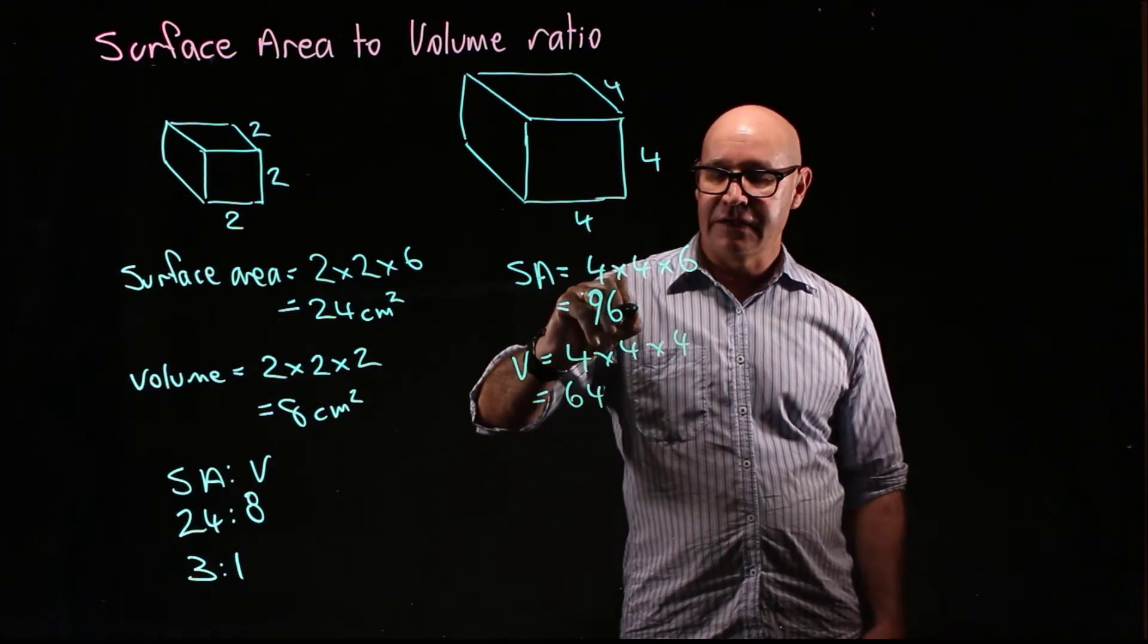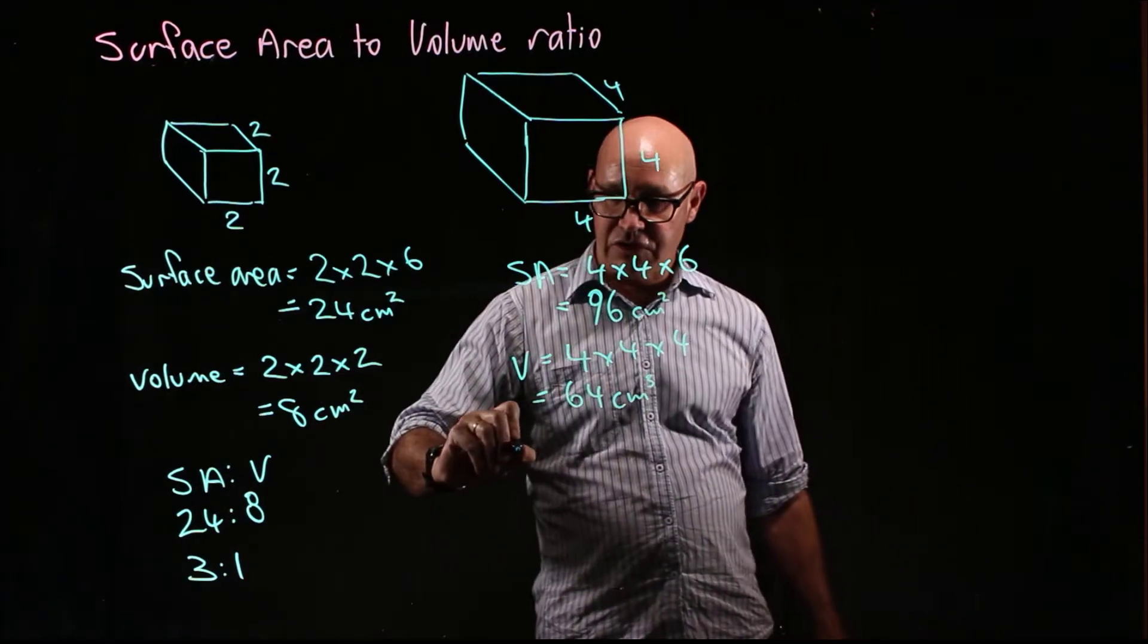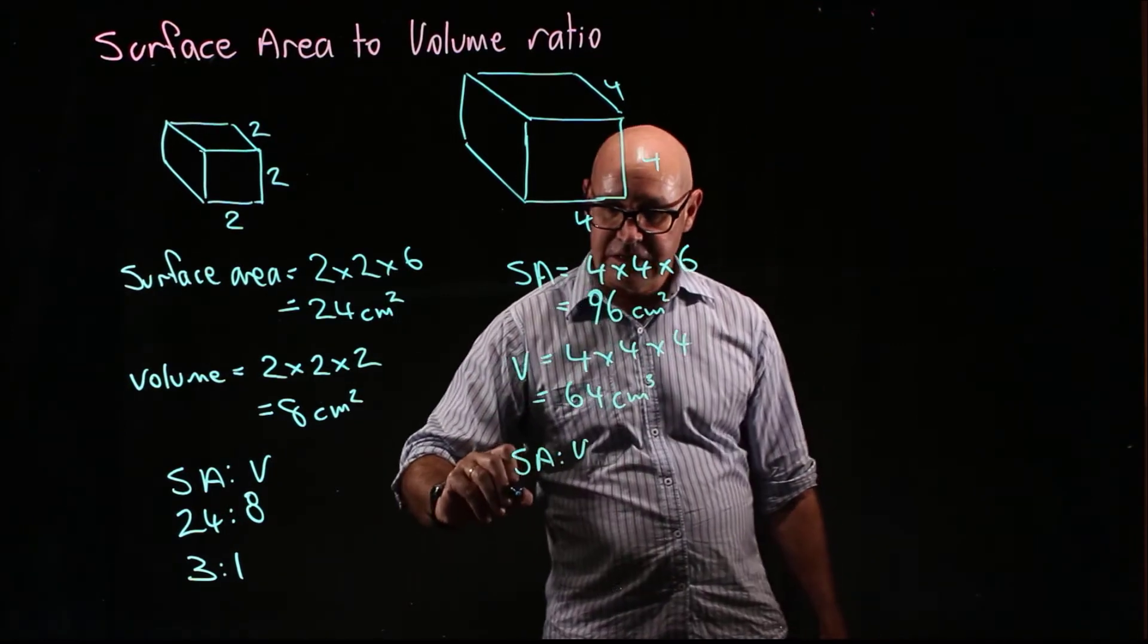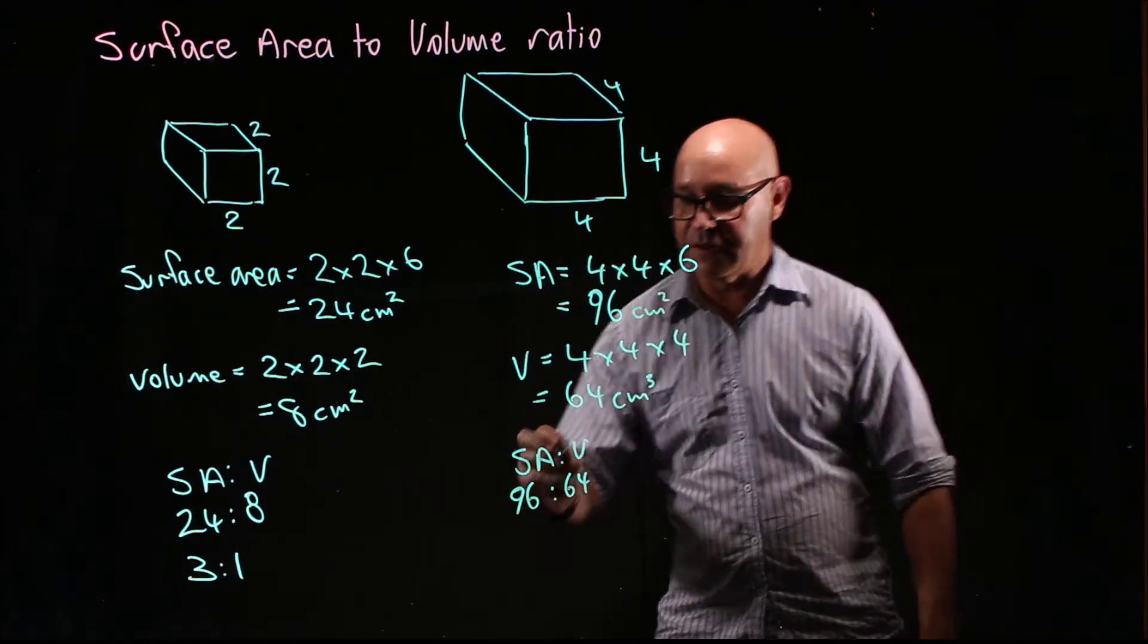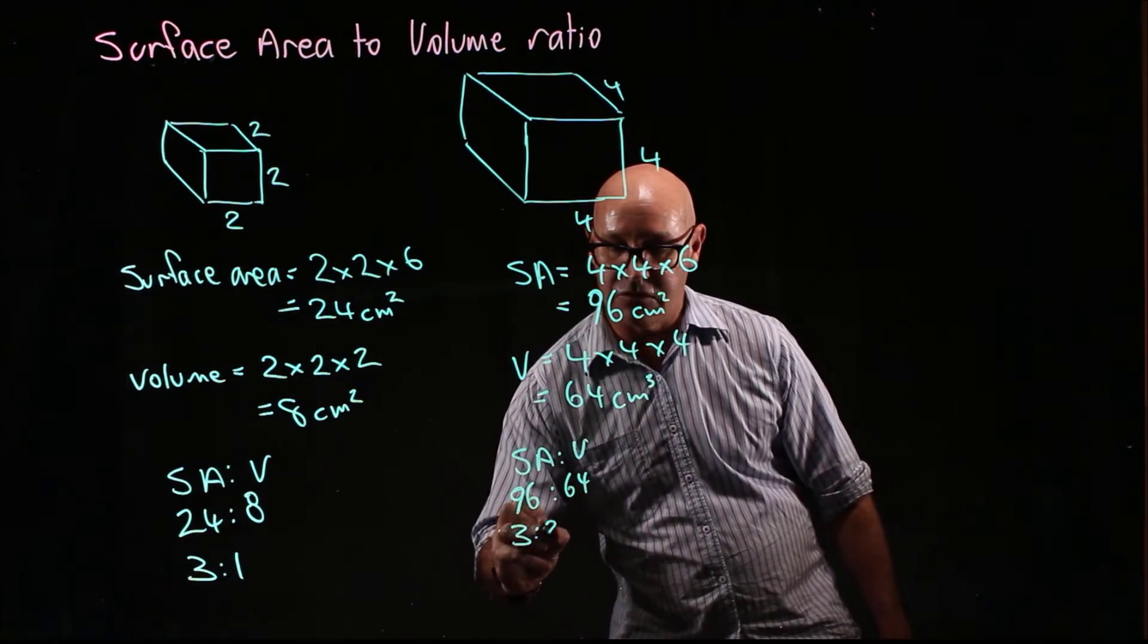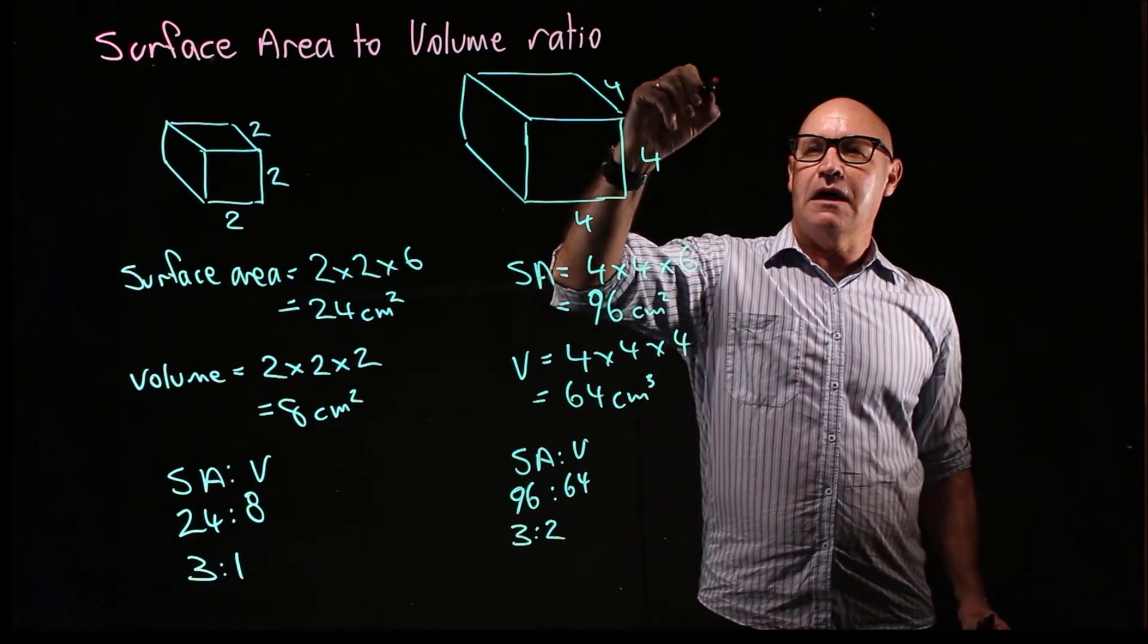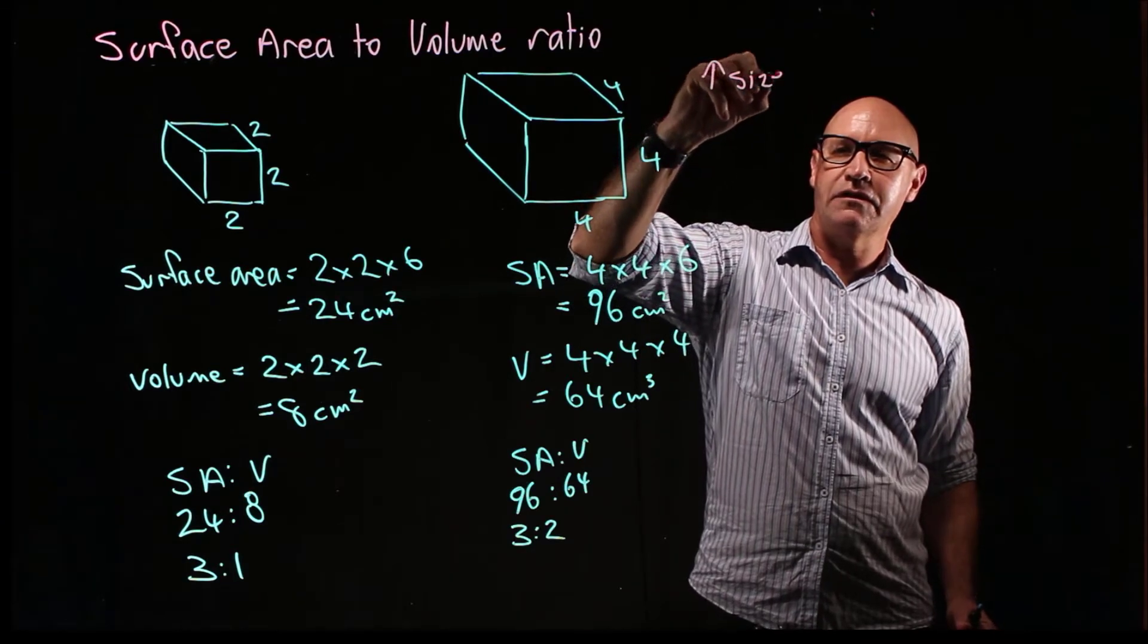So again, centimeters squared, centimeters cubed, so the surface area to volume ratio this time is going to be 96 to 64, or if we simplify that, that's 3 to 2. So based on that scenario, what do we know when we increase the size of a cell?